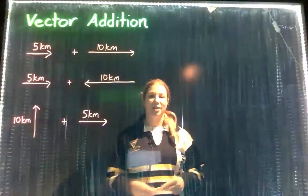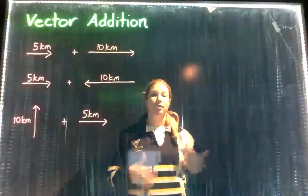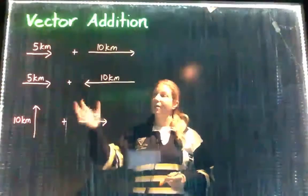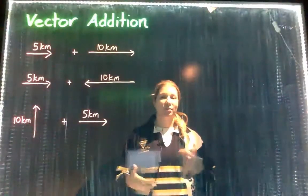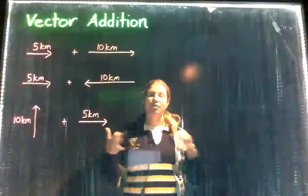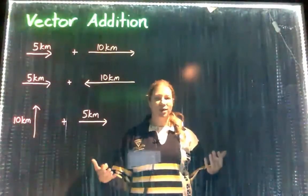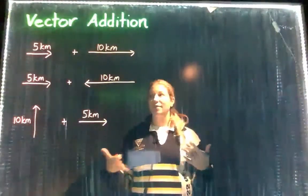Today we are learning about vector addition, so how to add vectors together and find a resultant vector. Examples like this you might have seen before and you might find them quite easy. So if we had five kilometers traveling east and another 10 kilometers traveling east, well then we can just add them simply together.